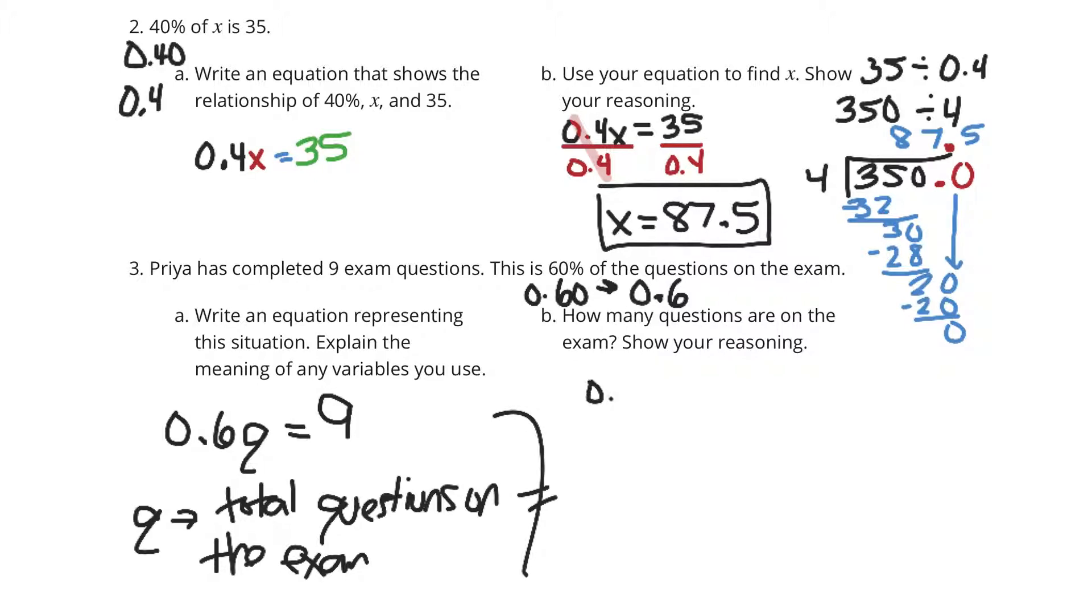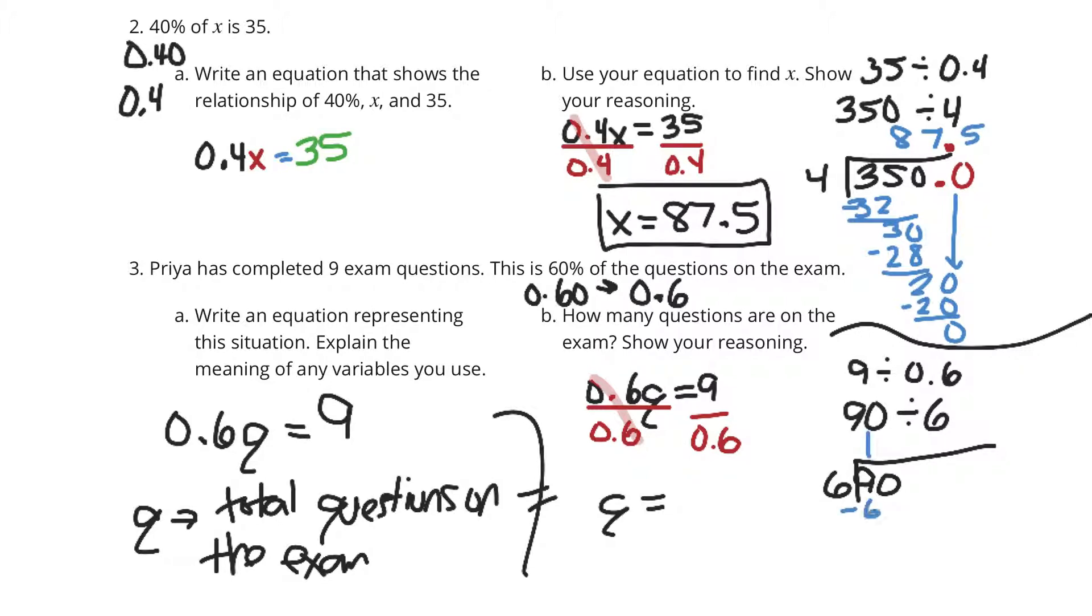And so now, to solve this, we'll have six-tenths Q equals nine. We'll divide by six-tenths on both sides. Six-tenths divided by six-tenths is one. And we're left with Q equals whatever nine divided by six-tenths is. Now, if I multiply both those by ten, we get 90 divided by six. So let's solve that. Ninety divided by six. Well, six goes into nine one time. Subtract the six. You're left with three and a zero. Six goes into 30 five times. We have 15. That's it. It stopped. So Q equals 15. So there are 15 questions on this exam.